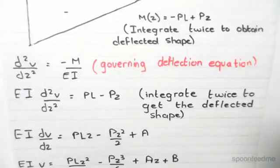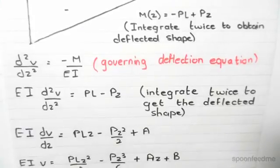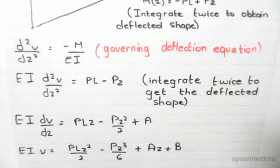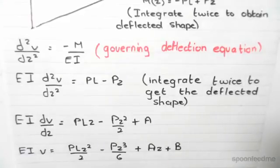Integrated once, we get the slope of deflection dv/dz and an unknown A. We integrate once more with respect to z to get the equation of deflection with unknowns A and B.